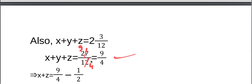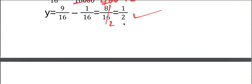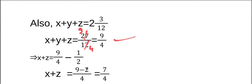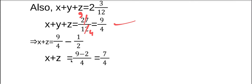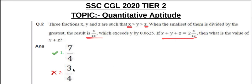So x plus z equals 9 by 4 minus y. The value of y is half. So x plus z equals 9 by 4 minus 1 by 2. LCM is 4, so 9 minus 2 equals 7. Therefore x plus z equals 7 by 4. The answer is 7 by 4, hence option 1 is correct.